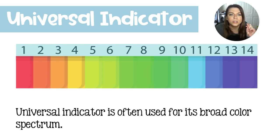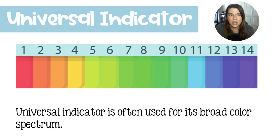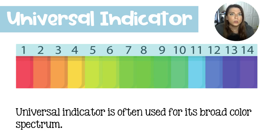But notice how close 7, 8, and 9 really are to each other, and how close 9 and 10 are, and how close 12 and 13 are, and how close 2 and 3 are. There are only so many colors, so it's very tough to get a reading. Not only that, the depth of the color can change based on how much indicator you've actually added.